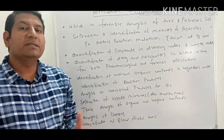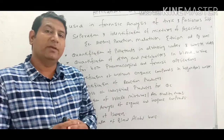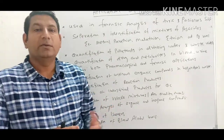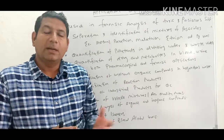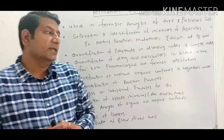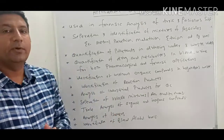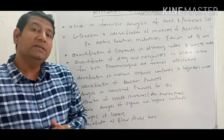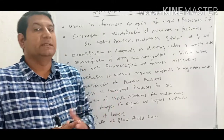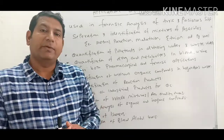We also discussed the various types of gases used as mobile phase in gas chromatography. Argon, helium, nitrogen, hydrogen, carbon dioxide, and air are generally used as the mobile phase. We also discussed the types of detectors, of which there are many types used in gas chromatography.